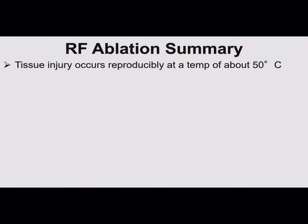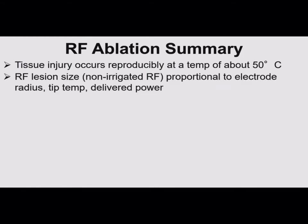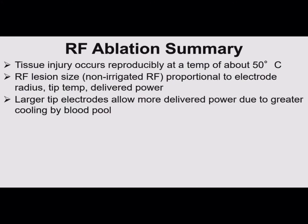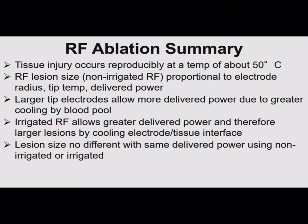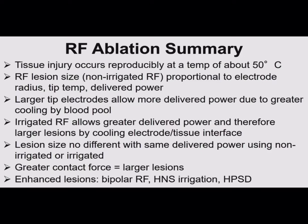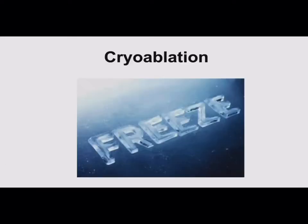RF summary: tissue injury occurs reproducibly at about 50 degrees. With non-irrigated ablation, RF lesion size is proportional to electrode radius, tip temperature, and delivered power. Larger tip electrodes allow more delivered power due to greater cooling by the blood pool, but you need to give more power. Irrigated RF allows greater delivered power and therefore larger lesions by cooling at the electrode-tissue interface — but lesion size is no different with the same delivered power using non-irrigated or irrigated RF. Greater contact force generally gives larger lesions. If you're struggling with a deep substrate: bipolar RF, half-normal saline irrigation, or high-power short-duration lesions are options.